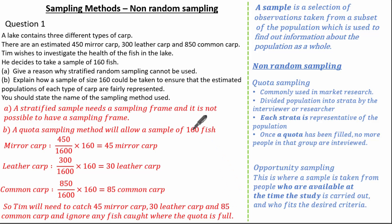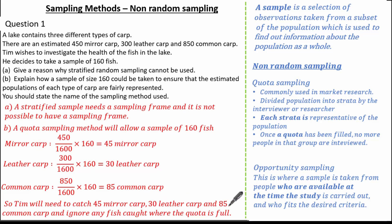When referring to quota sampling in the exam, ensure you include the relevant numbers and don't forget to state a comment such as 'ignoring any fish or items caught where the quota is full.' In summary, we've gone through two types of non-random sampling methods: quota sampling and opportunity sampling. It's important that you remember the keywords associated with sampling and incorporate those keywords into your explanations.